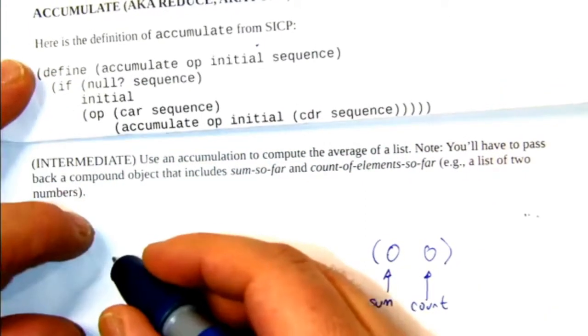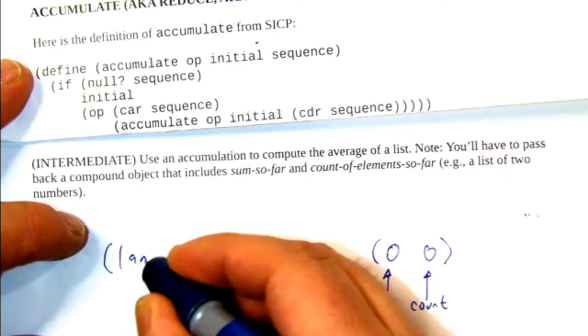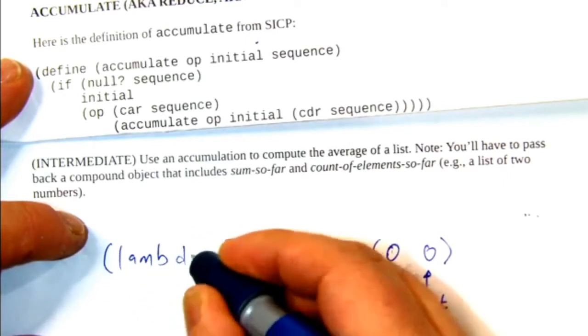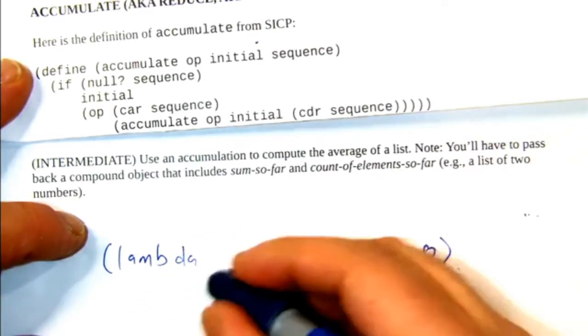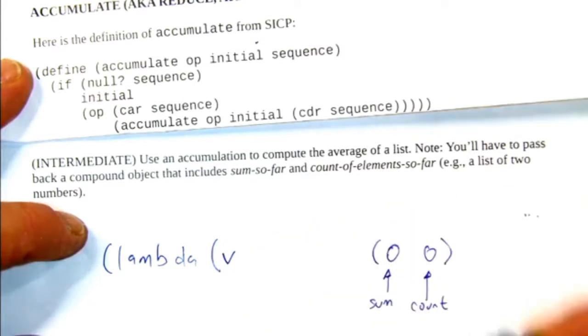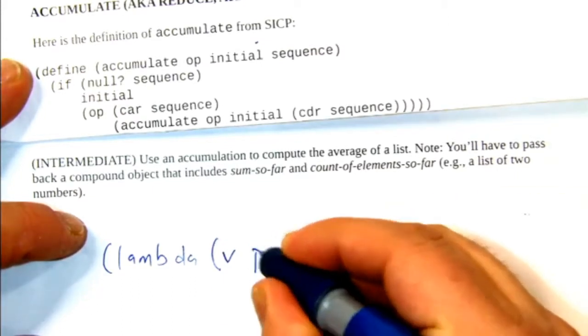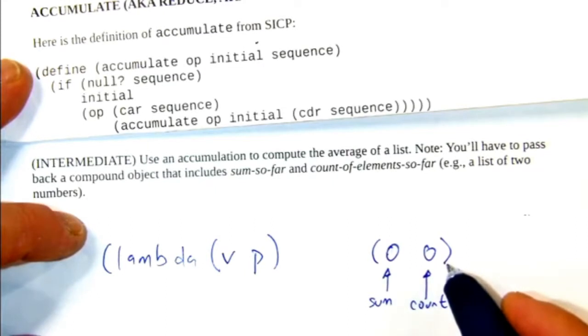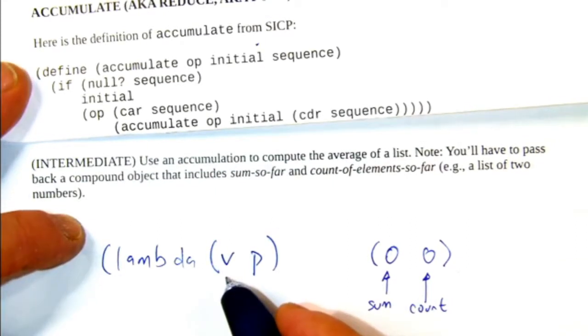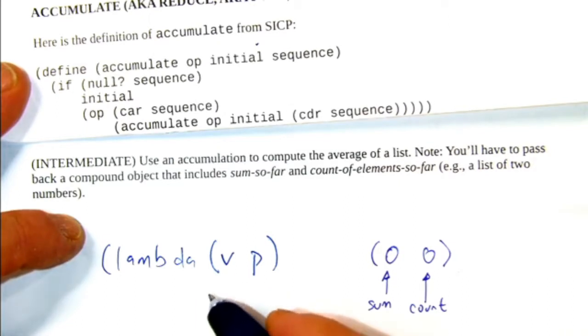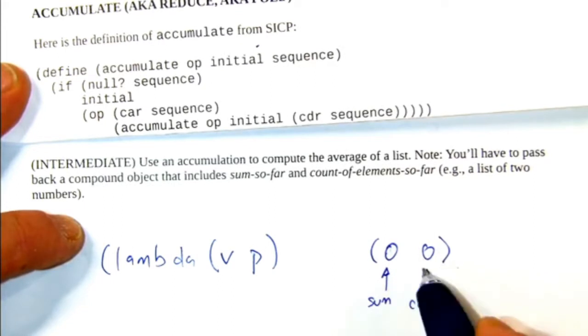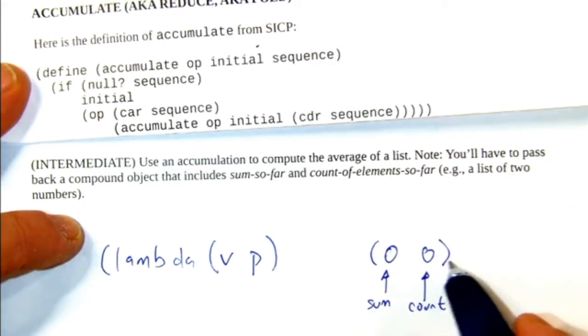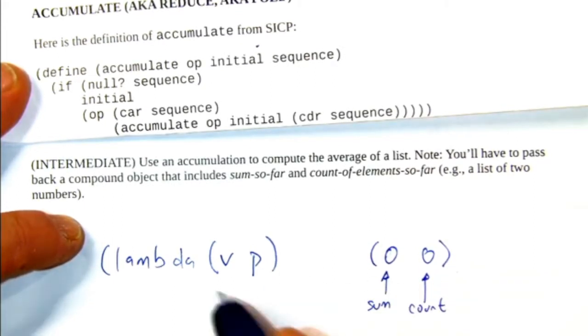Here's what the lambda is going to do. It's going to be combining two operations. It's going to be counting and adding. So it's going to receive a value and receive a prior accumulation, which is an object that looks like that. What is V? It's each number in the list. So what does it have to do? It has to create a new object like this by incorporating the object that's been given as P and then the new item that we've encountered.